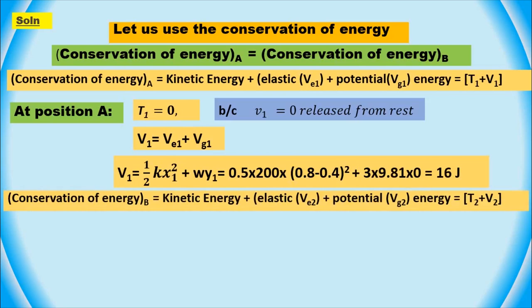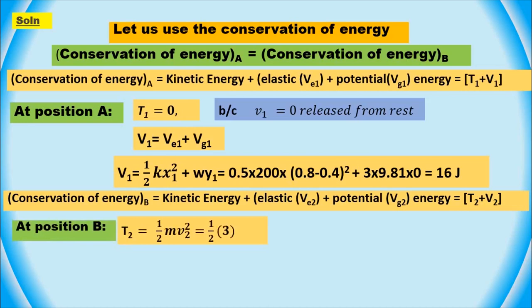Since there is no friction, this energy is conserved, which means that the kinetic energy at point B is equal to the potential energy at point A. The kinetic energy at point B is half times mass of slider times velocity squared, where M is the mass of the slider and V is the velocity.